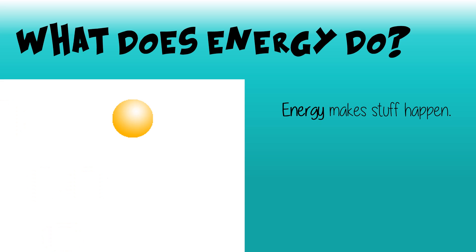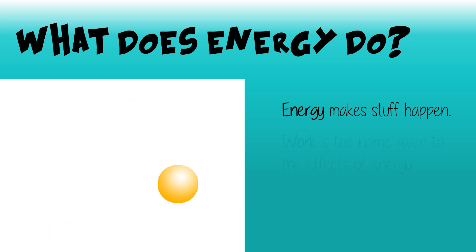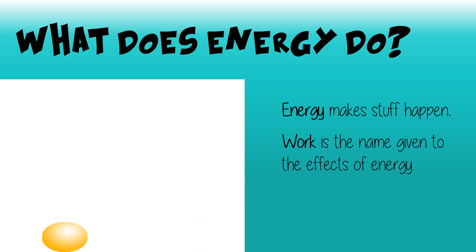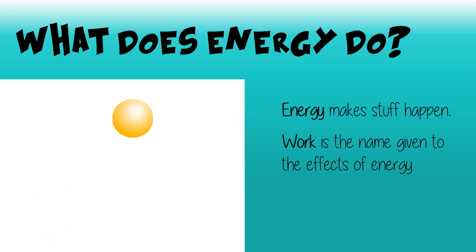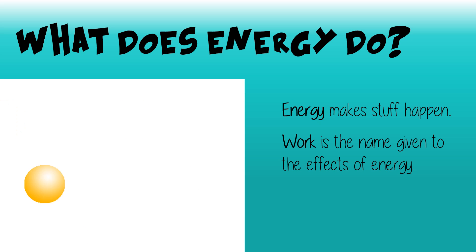If we look at this example here, we can see energy has been used to make this ball bounce. Work is the name given to the effects of energy. So if an object is shifted or forced to change shape, then work has been done. Energy is measured in joules and it takes one joule of energy to lift 100 grams one metre.